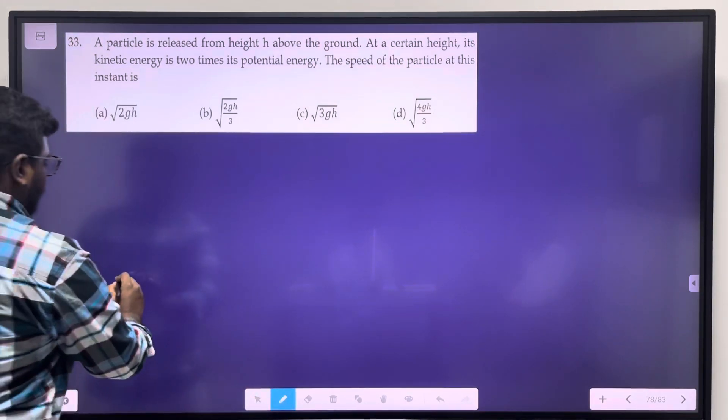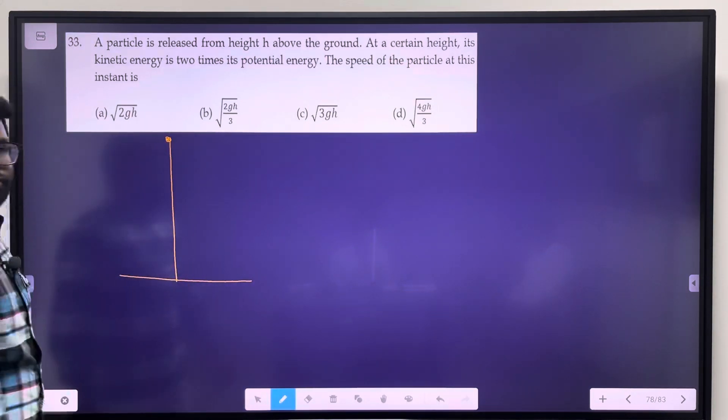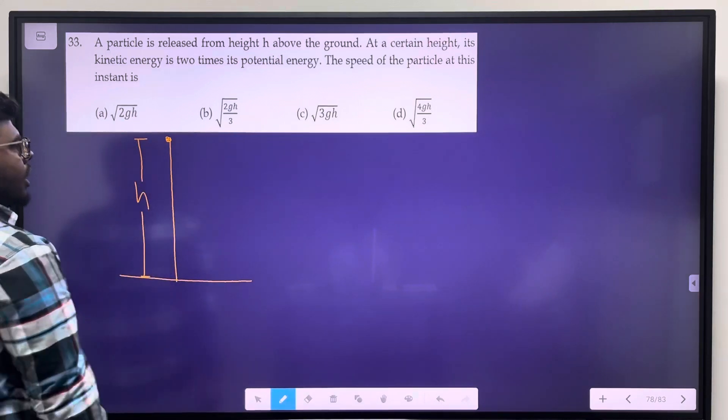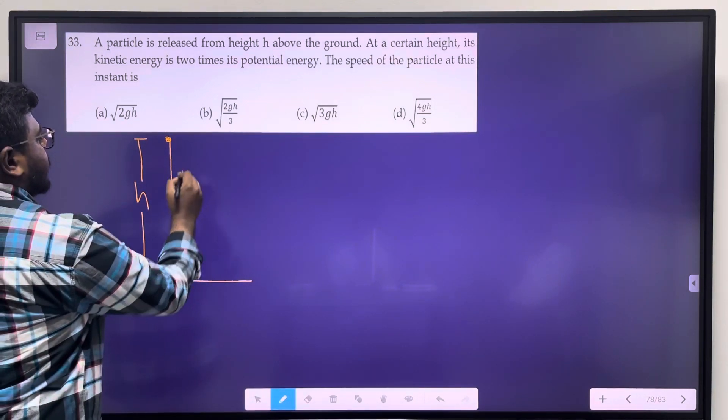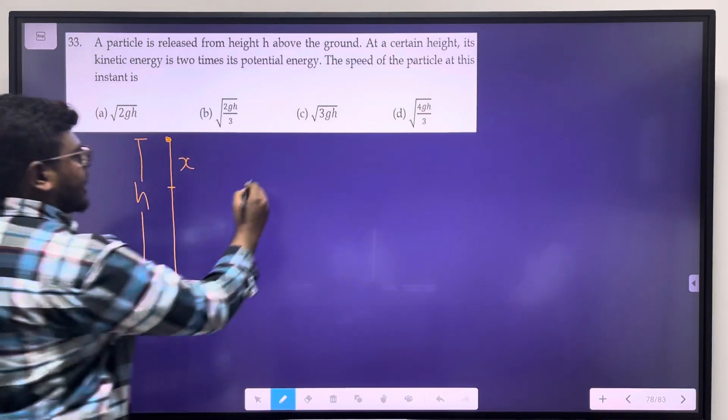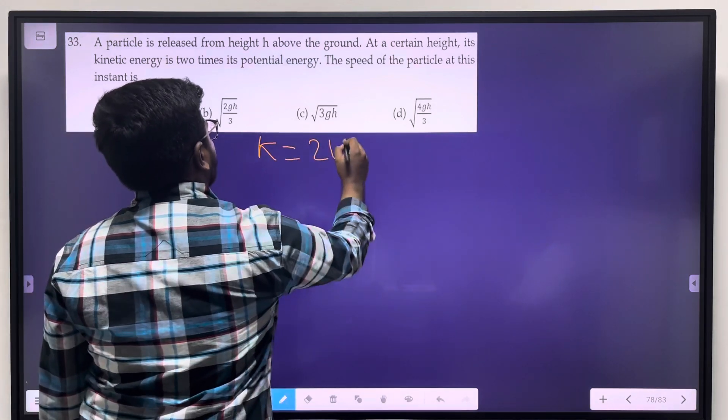So, if one object is dropped, it is h above height. If at one instant some distance is traveled, at that instant, kinetic energy is 2 times potential energy.